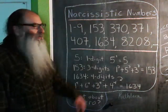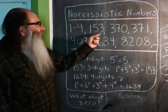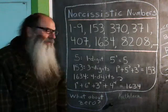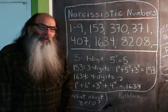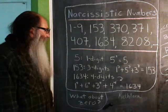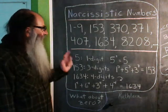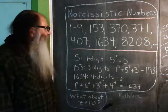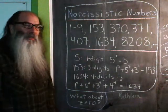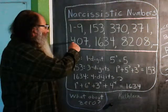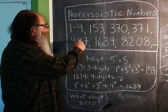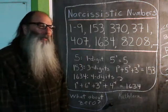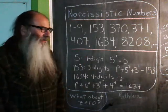The numbers 1 through 9 are all Narcissistic. 153, 370, 371, and so on. What makes a number a Narcissistic number is this type of behavior: you count up the number of digits in the number. For example, 407 has 3 digits. So if we take 4 cubed plus 0 cubed plus 7 cubed, we'll get 407. That's what makes that a Narcissistic number.